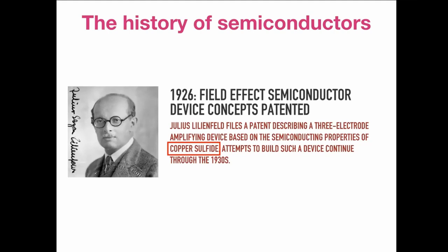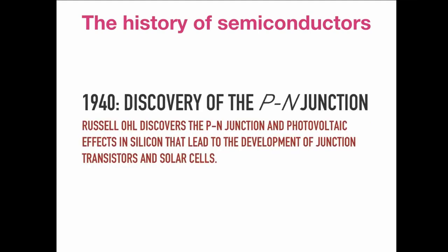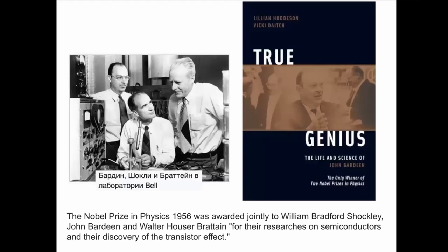For about 50 years, chalcogenide was the only semiconductor material studied. It was only with the discovery of the transistor and the PN junction that silicon became an important material. For the discovery of the transistor, Bardeen, Shockley, and Brattain received the Nobel Prize.